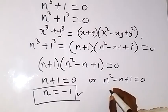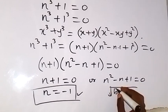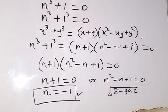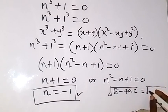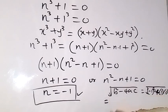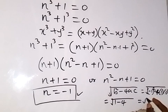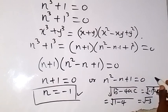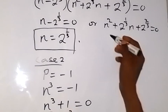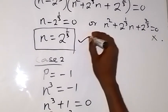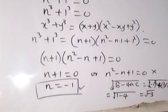Using the discriminant, root of b squared minus 4ac, for n squared minus n plus 1 equals 0: b is minus 1, a is 1, c is 1. This gives root of minus 1 squared minus 4 times 1 times 1, which is root of 1 minus 4, equal to root of minus 3. This is a complex number, so there is no real solution for this equation. Similarly, the other quadratic factor also yields no real solution. Therefore, the only real solutions are n equals 2 raised to power 1 over 3 and n equals minus 1.